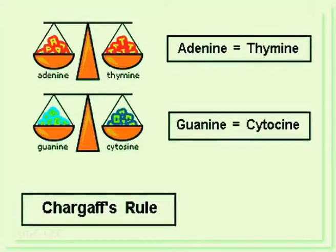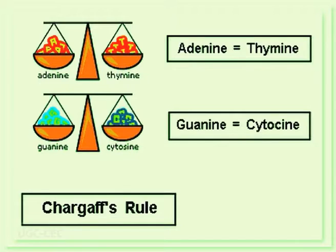He found that although the relative amount of a given nucleotide differs among species, the amount of adenine equals that of thymine, and the amount of guanine equals that of cytosine. That is, in the DNA of all organisms studied, a 1:1 correspondence exists between the purine and pyrimidine bases. This is known as Chargaff's rule.